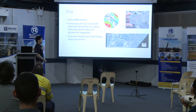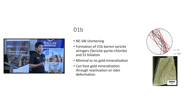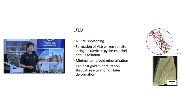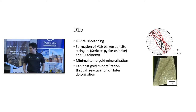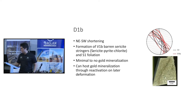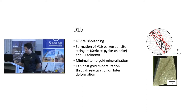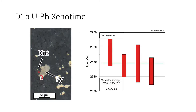Following is the D1b deformation, which is northeast-southwest shortening forming the primary foliation, identified by sericite stringers. There is minimal to no gold mineralization associated with D1b, though it can host mineralization through reactivation at later stages. From the sericite stringers, I dated xenotime found together with sulfides and got an average date of 2658 Ma, which turns out to be very close to the age of the Kanoona Bell porphyry itself.